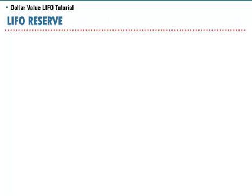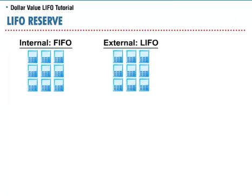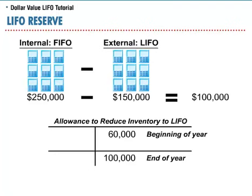To fully understand the LIFO effect, let's look at the following example. Assume Moosehead Company uses the FIFO cost flow method for internal reporting purposes and LIFO for external purposes. At January 1st, the beginning of the year, the LIFO reserve was $60,000. At the end of the year, FIFO costing results in ending inventory of $250,000, while LIFO costing results in ending inventory of $150,000. Therefore, the LIFO reserve should be $100,000 at year-end. Because the LIFO reserve is currently only $60,000, we need to credit the account for $40,000. The LIFO effect is therefore $40,000.